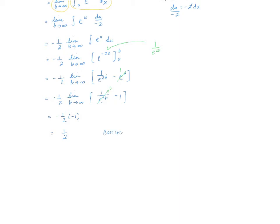The integral converges to one-half. A quick sketch shows that e to the negative 2x gets closer and closer to the x-axis. Essentially, if our function approaches the x-axis fast enough, we can compute this area. If it takes too long to approach the axis, the integral diverges because the area grows without bound.